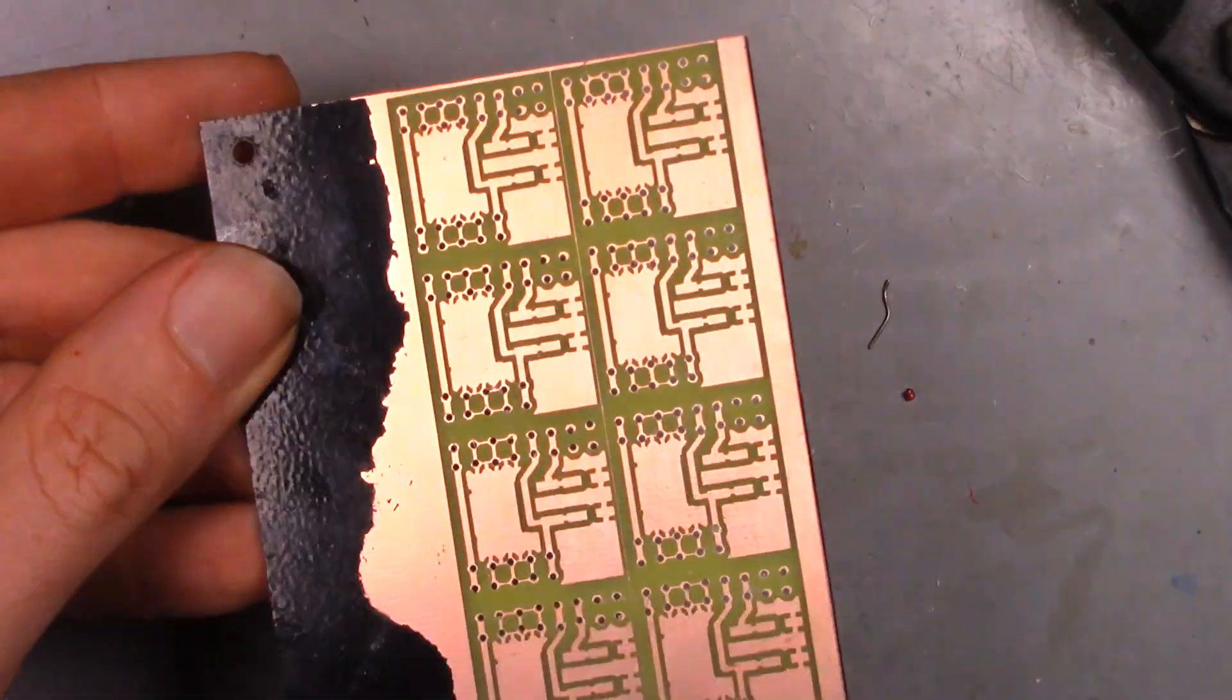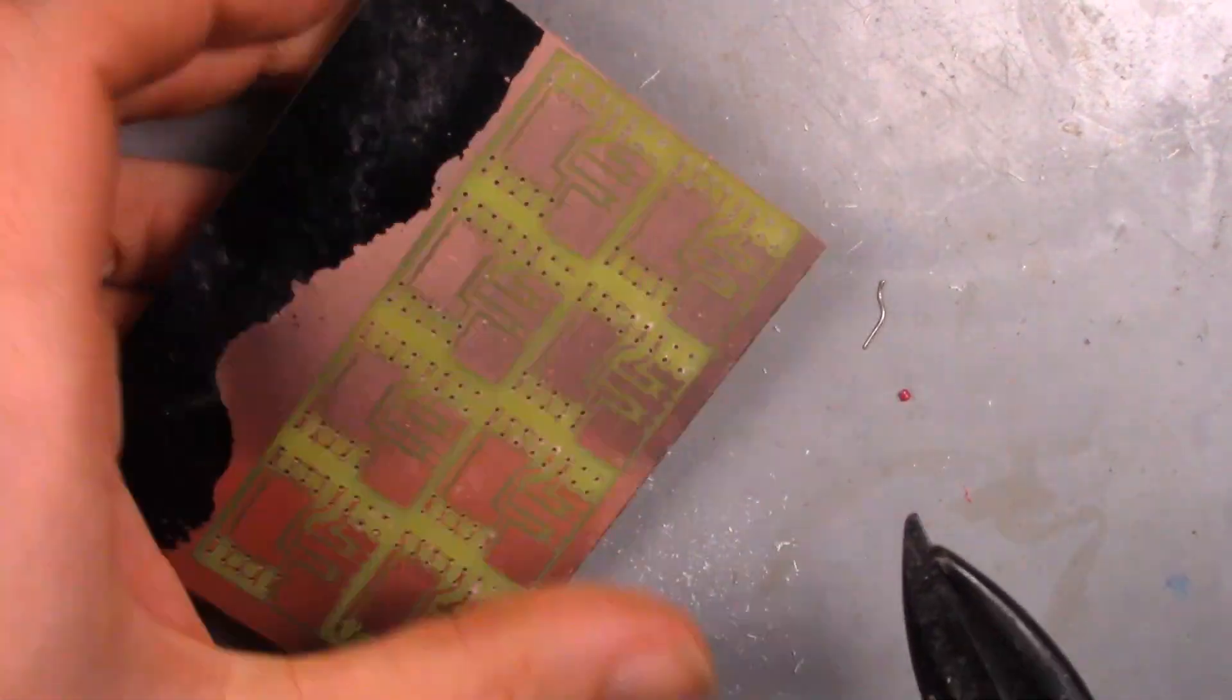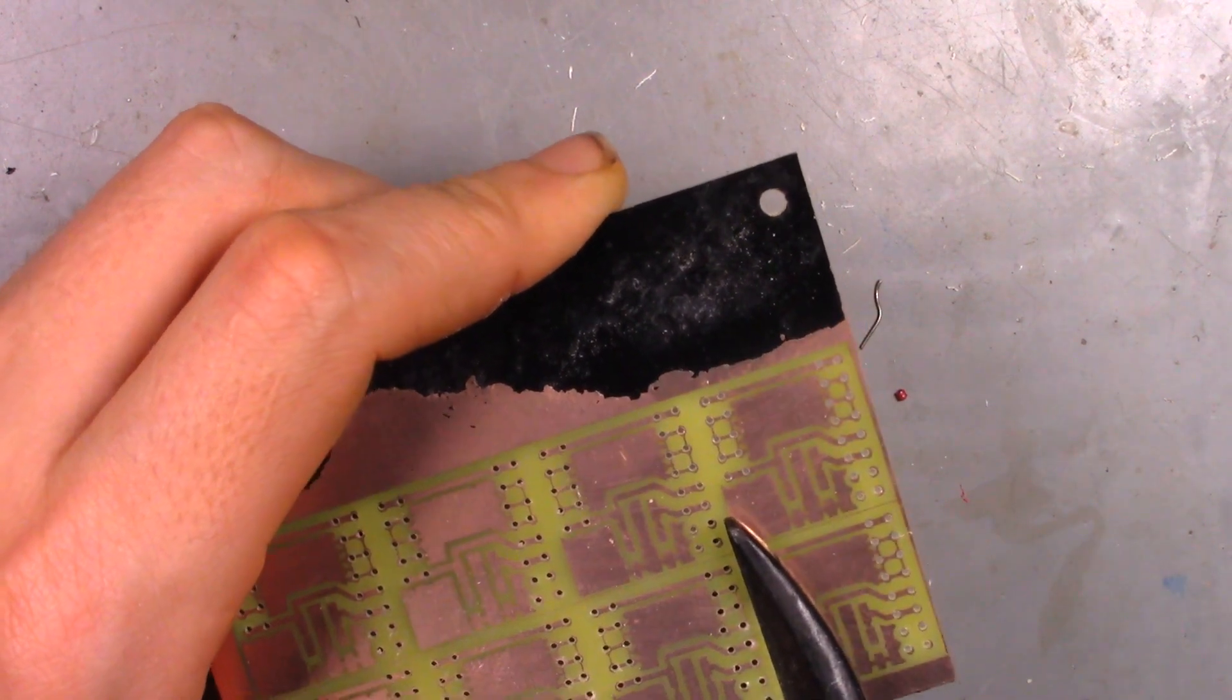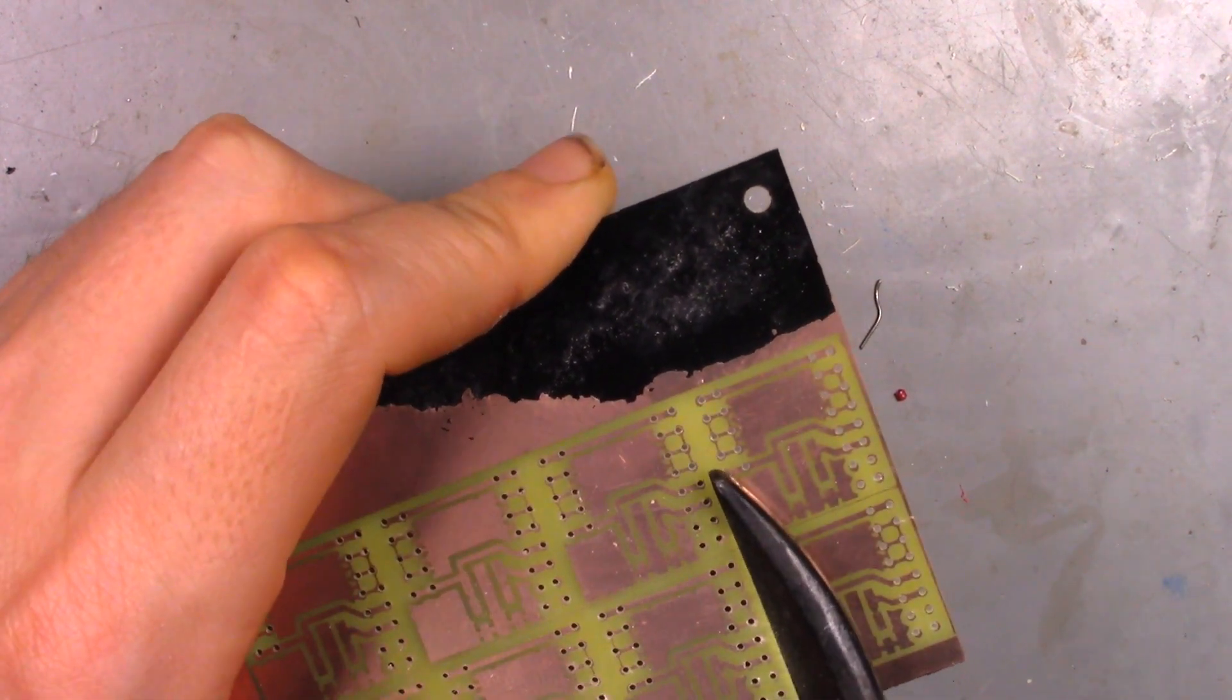With the drilling done, the boards can now be cut into individual pieces. I'm using tin snips. On thin material like this, the snips leave a nice edge. It doesn't make a lot of dust like the table saw.